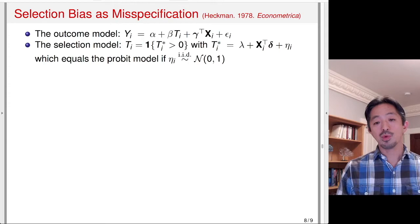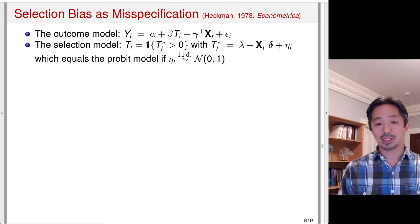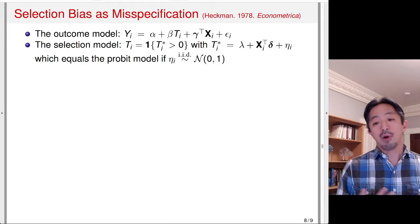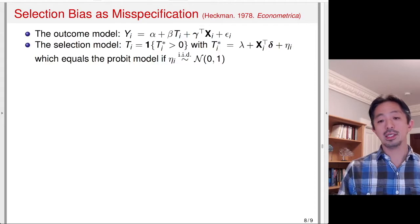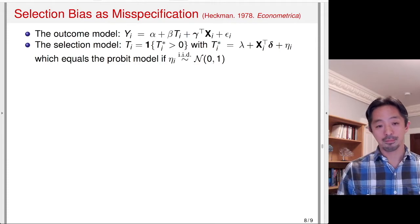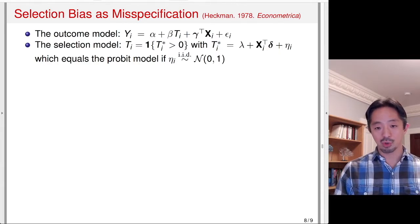Suppose we have a linear outcome model and a selection model where T equals either 1 or 0. We assume a latent variable T_i*: if T_i* is greater than 0 you receive treatment, if T_i* is less than 0 you don't. Suppose T_i* is a linear index. If the error term η_i is Normal(0,1), this is essentially a probit model — a selection model for who gets treatment — and the outcome model is the linear regression we've been studying.